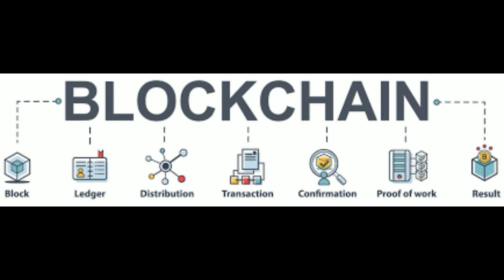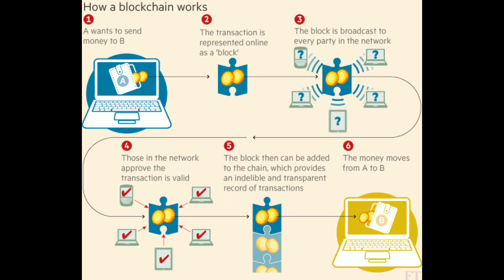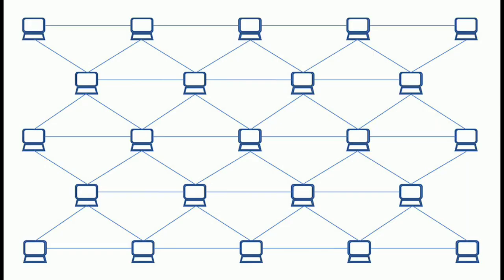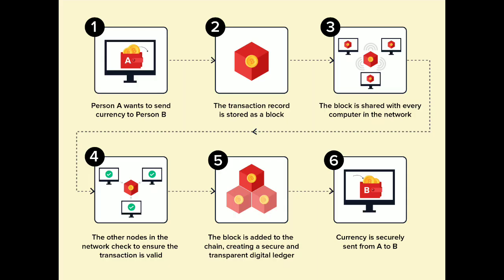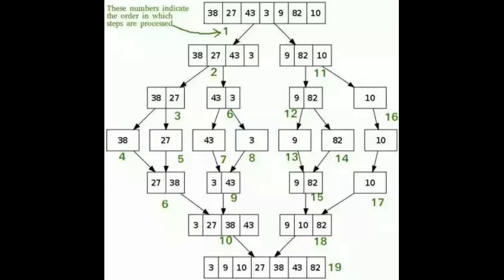Simply put, a blockchain is a chain in which each link contains a set of transaction data. This chain is replicated in every node so they can check each other. Each link is encrypted based on its content — the entire chain must be decrypted, converted, and then re-encrypted within a short period of time on a sufficient number of nodes to gain more than 50% control of the network. In other words, it's practically impossible, as shown in this illustration.